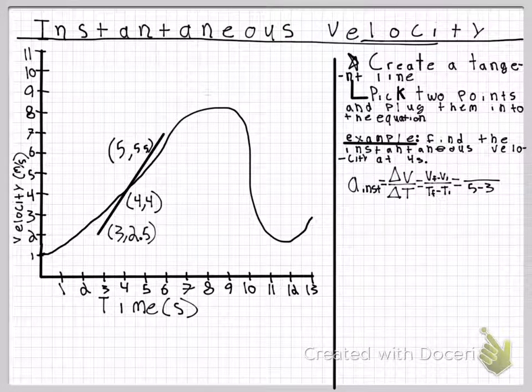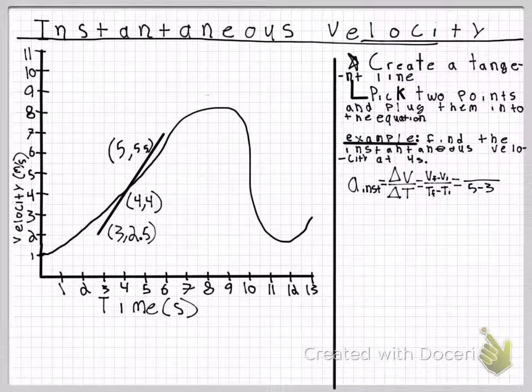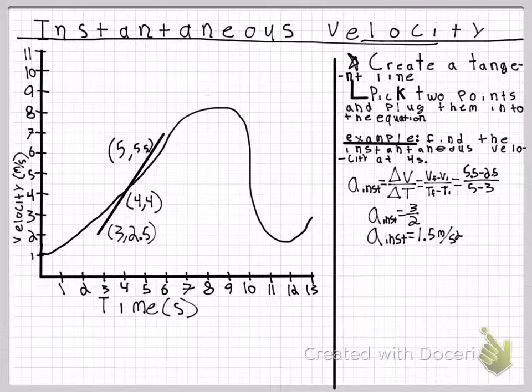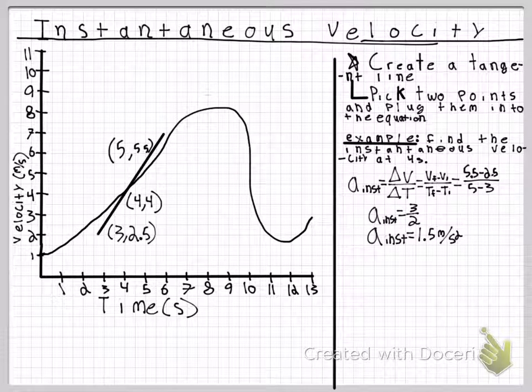After you plug that into the equation, you have 5 minus 3 for the time and 5.5 minus 2.5 for the velocity. This comes out as 3 divided by 2, which leads to an instantaneous velocity of 1.5 meters per second squared.